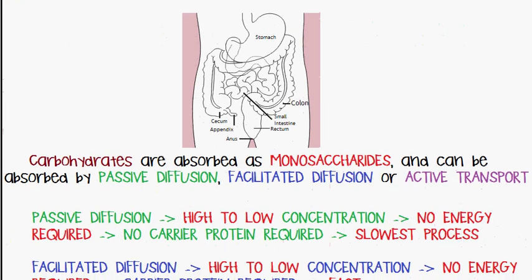As we discussed in the last video, carbohydrates are absorbed as monosaccharides. The process of digestion is where polysaccharides or disaccharides are degraded or hydrolyzed into monosaccharides. These monosaccharides can be absorbed by passive diffusion, facilitated diffusion, or active transport.